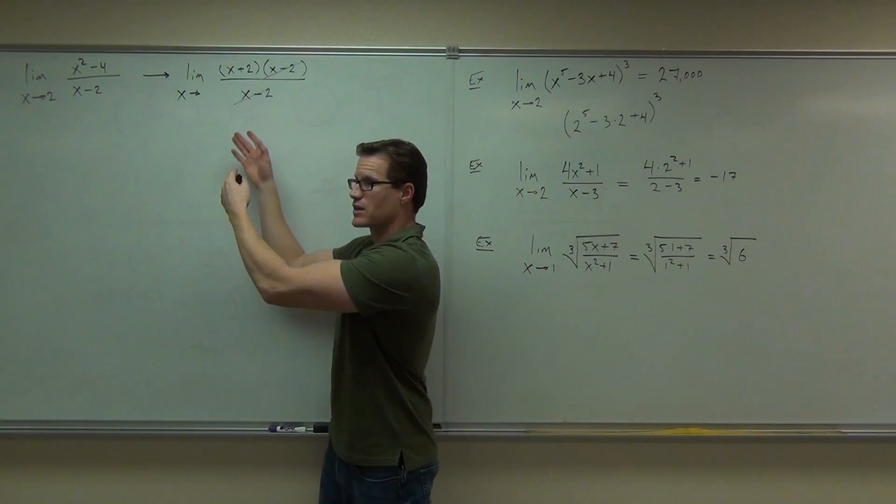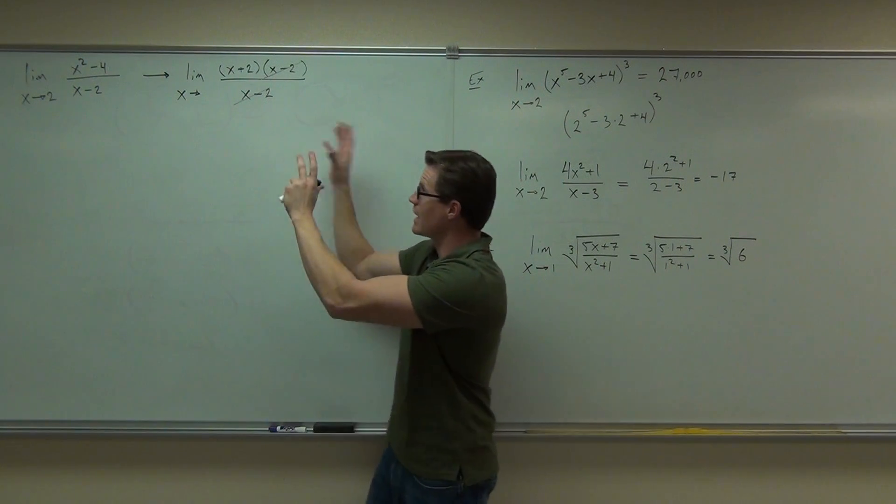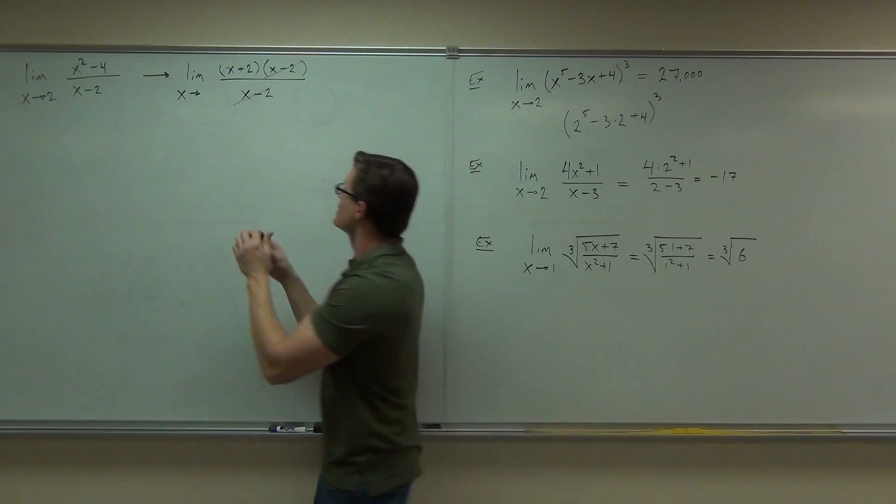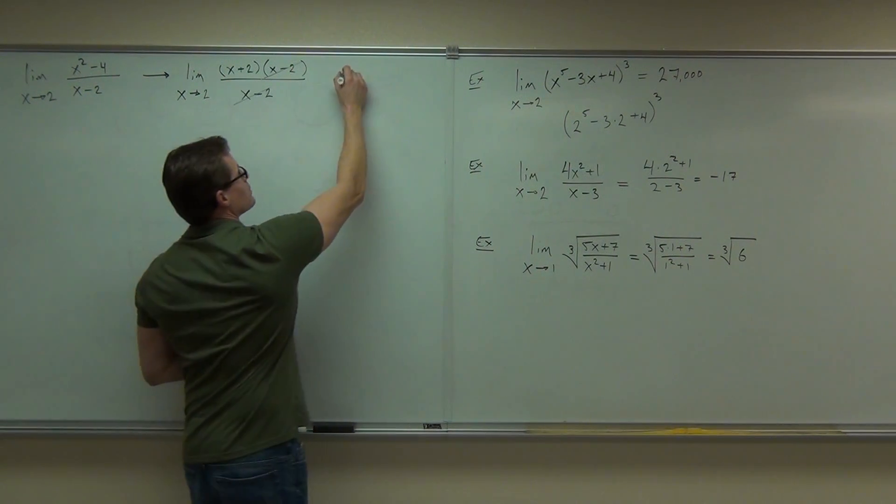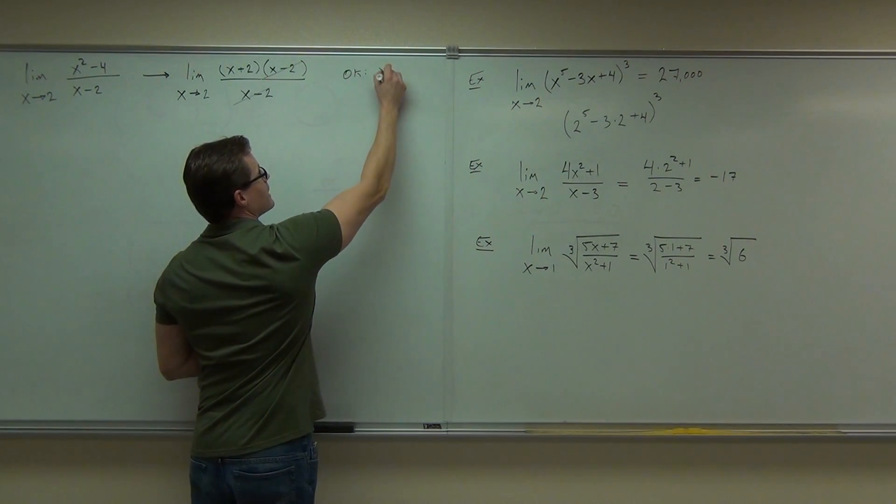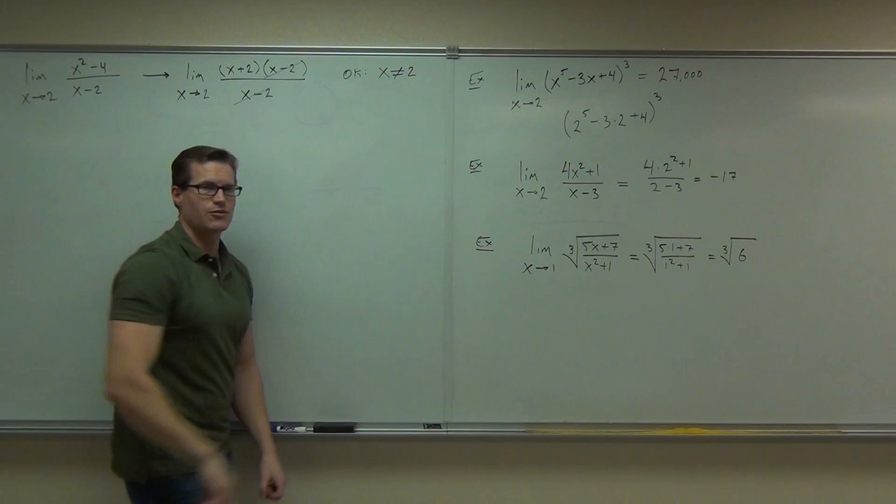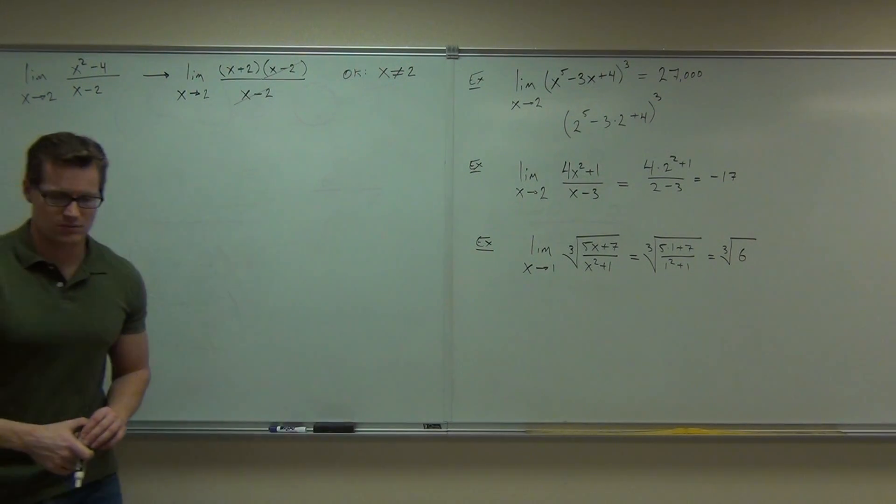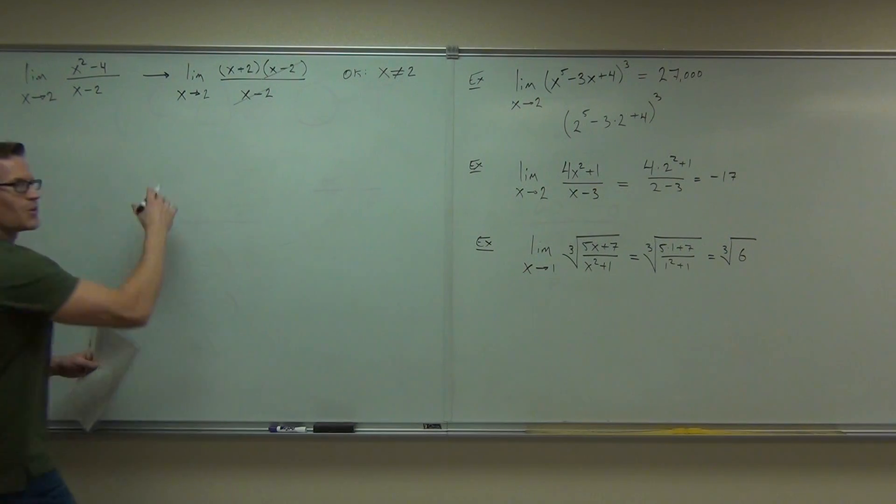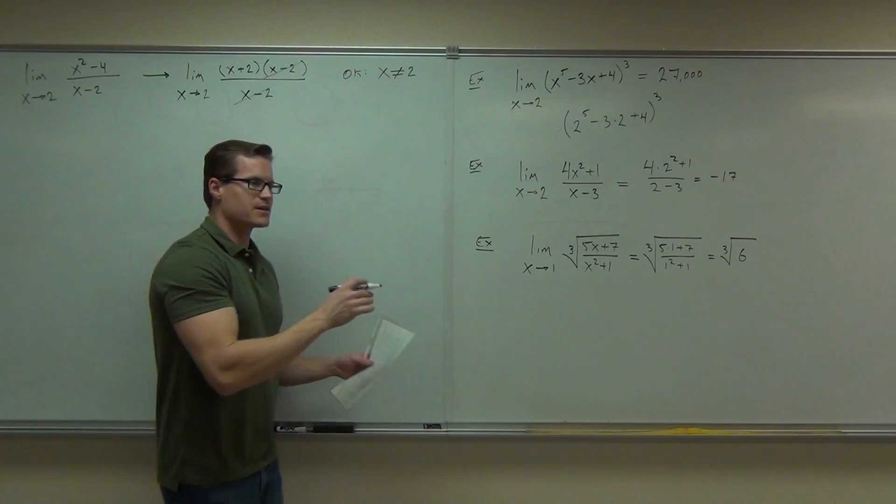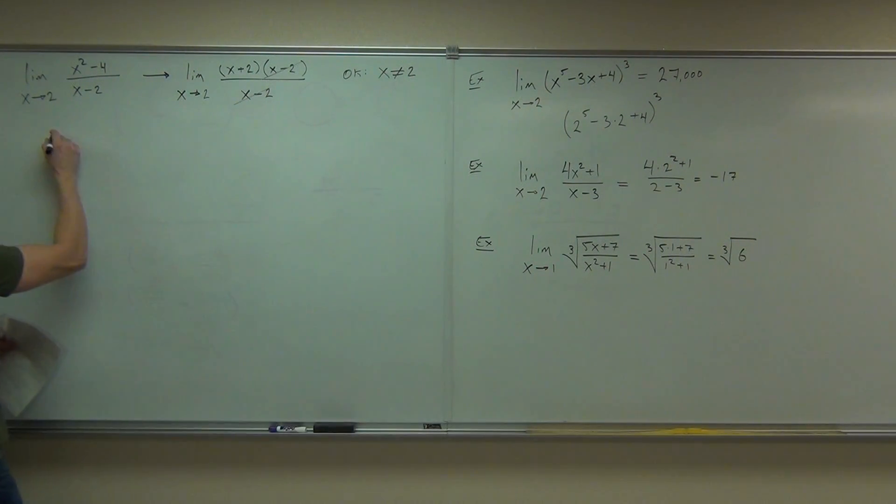But in order to do that, we do have to simplify this function. We can factor, we can simplify it because we're actually not getting to the 2. This is okay. It's okay because x never equals 2. It never gets there. Really close? Yes. So what we can do now is say, all right, then this according to the limit is exactly the same thing as that.